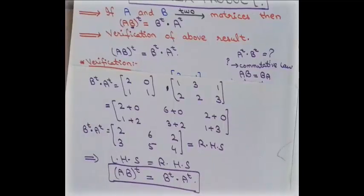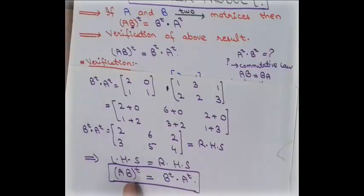This is a very important property of the transpose: the transpose of two matrices in product form equals the transpose of the second matrix multiplied by the transpose of the first matrix. That's all for today's lecture. If you liked this, please subscribe, like, and share.